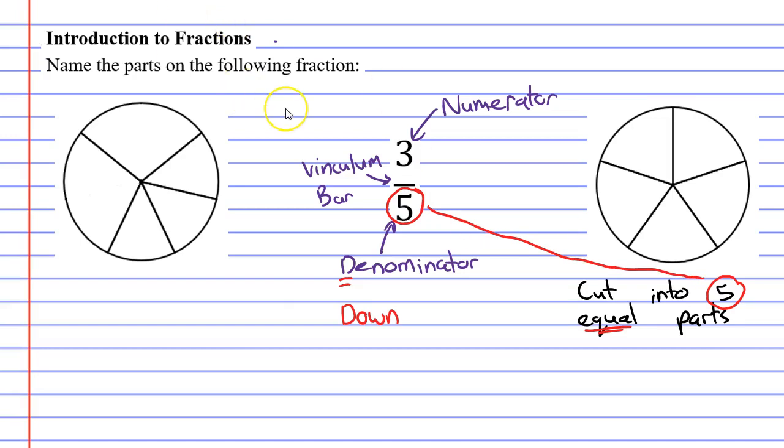So what does the numerator do? The numerator tells us how many of these parts are to be colored in. So we need to color in 3 of the parts of this circle.